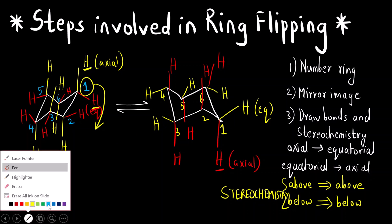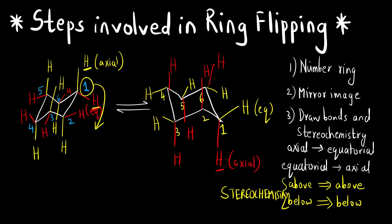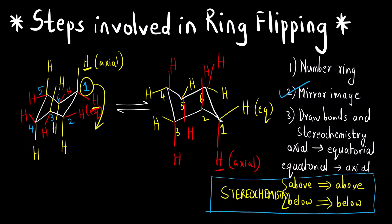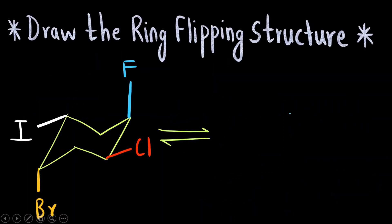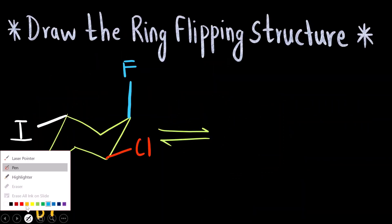The most important points are: first, draw the mirror image. Second, take care of the stereochemistry — groups above the plane remain above the plane, and groups below the plane remain below the plane. If you follow the stereochemistry, automatically the axial groups will become equatorial and the equatorial groups will become axial. Let us now understand this with another example.